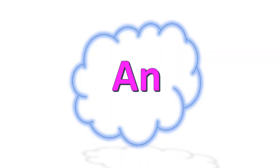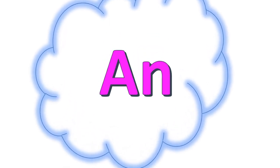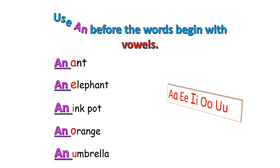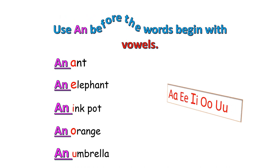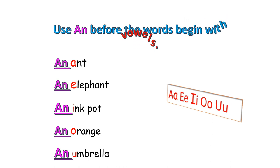Let's learn the article 'an' before words. We use 'an' before words that begin with vowels. Look at the first letter of these words given below — they are vowels. So we use 'an' before these types of words. Let's read together.